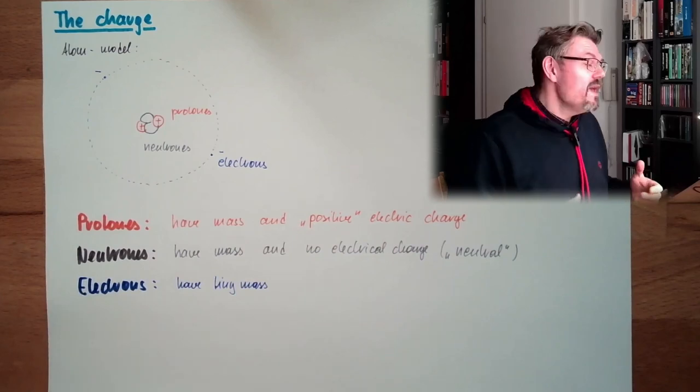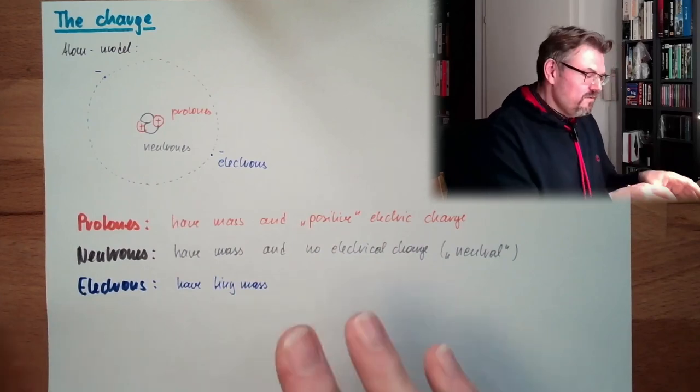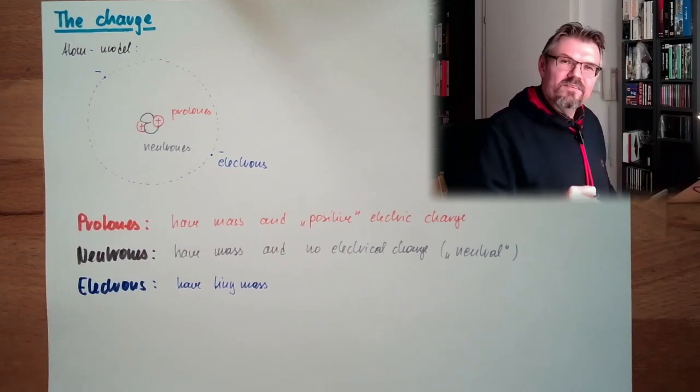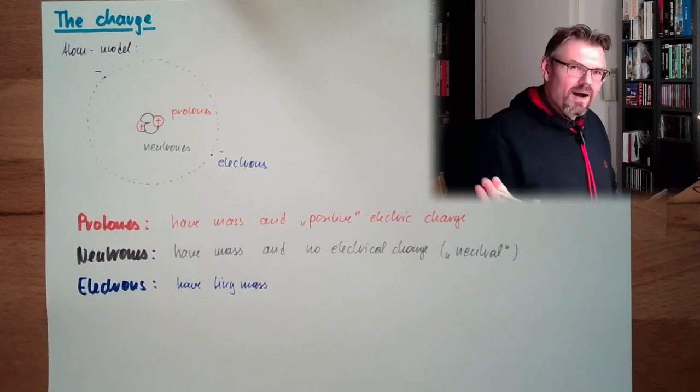Even compared to proton. Not just compared to me. Compared to me, everything is a tiny mass. Proton, neutron, electrons. But even compared to protons and neutrons, electrons have almost no mass.